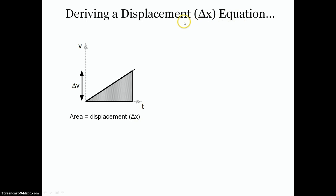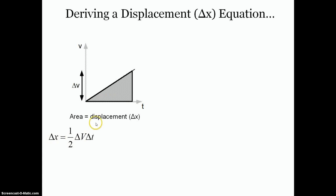Let's look back at how we found displacement, or how far something travels when the velocity is changing or increasing. Remember that the area shaded in between the velocity line and the zero axis is our displacement. When something is accelerating, that area is a triangle. The area of a triangle is one-half times the base times the height. So displacement equals one-half times the change in time multiplied by the change in velocity — which is one-half times the change in velocity times the change in time.